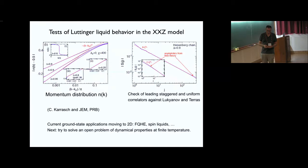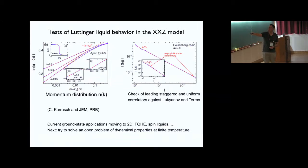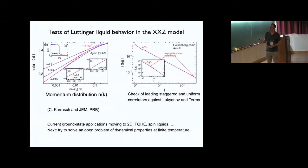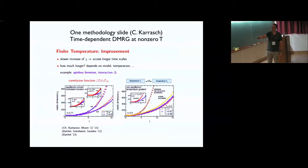Here's an example of a famous correlator: equal-time correlation functions in the ground state of the XXZ spin chain. Lukyanov and Terras had computed both the leading asymptotic behavior and the subleading part, and you can see the field theory and the numerics agree very well. You can convert that to a momentum distribution problem — a famous signature of Luttinger liquids. In a Fermi liquid, the momentum distribution n(k) has a step function across the Fermi level; in 1D you have a cusp-like singularity instead, which you can also pull out from the numerics.